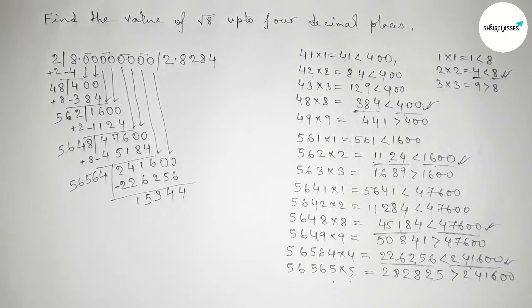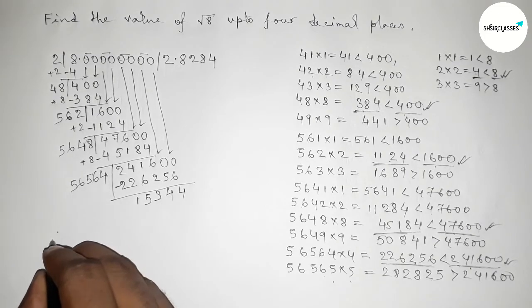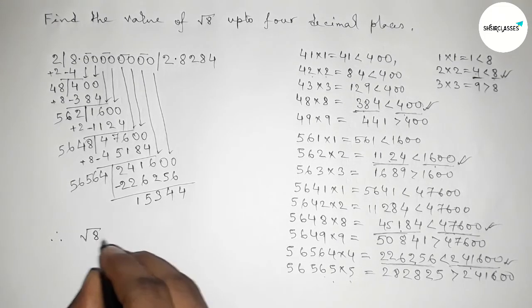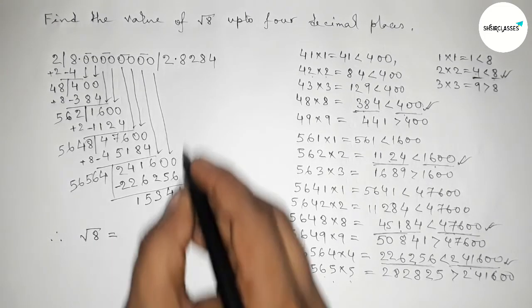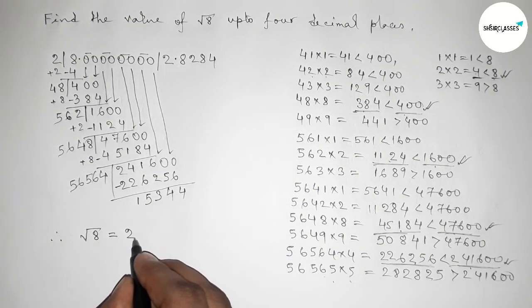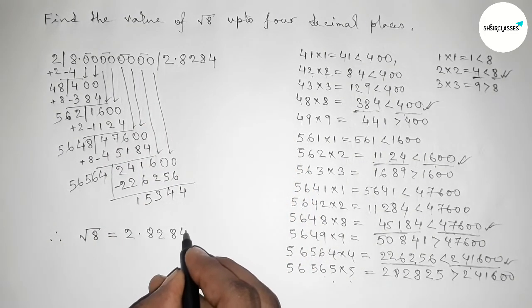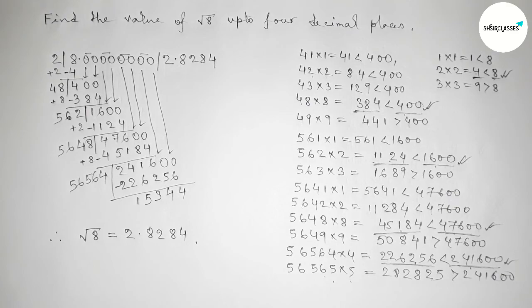Therefore, the value of root 8 up to 4 decimal places is 2.8284. That's all. Thanks for watching — if this video is helpful to you, please share it with your friends.